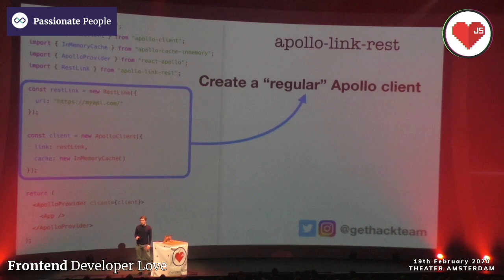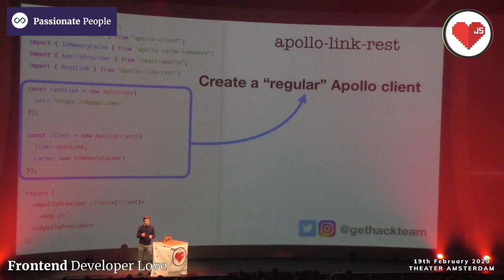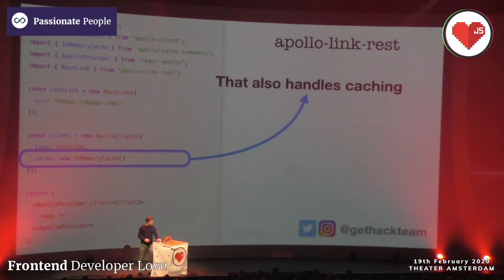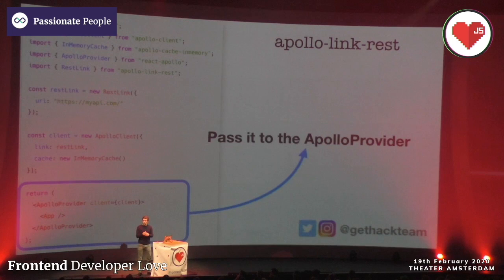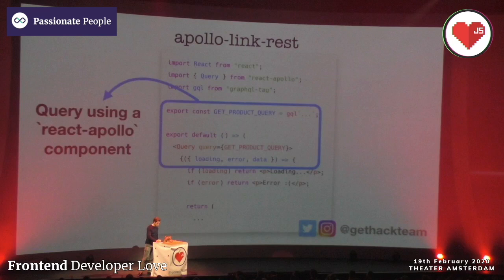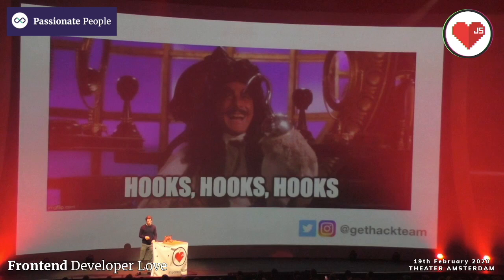If you're familiar with Apollo already, the first step is to create a regular Apollo client. In this Apollo client you define the URL to your REST API and you can define caching. Where regular REST doesn't come with caching, if you use Apollo cache and create a GraphQL API from your REST API, then you get caching out of the box. Once you've created this client, you pass it to the Apollo provider. In React you can pass information using providers, so every component inside the provider will be able to fetch those REST endpoints using GraphQL queries. You can use a query component from Apollo or a useQuery hook.